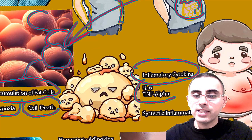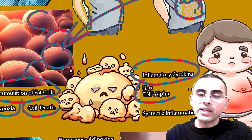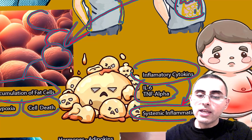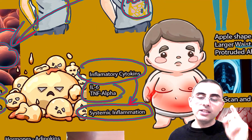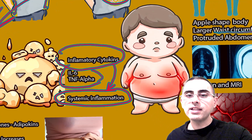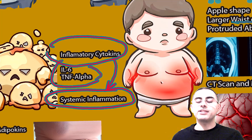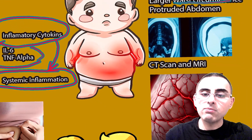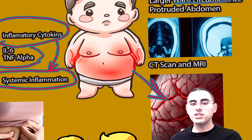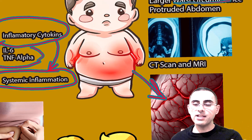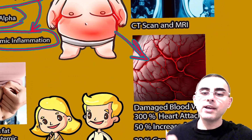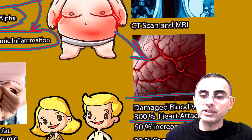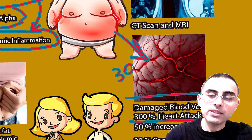When these fat cells die, they release different chemicals known as inflammatory cytokines, such as interleukin-6 and tumor necrosis factor alpha. These inflammatory cytokines cause systemic inflammation in the body that can last for several years or even decades. This low-grade chronic inflammation destroys small blood vessels and damages different internal organs, cells, and tissues, leading to serious health risks.